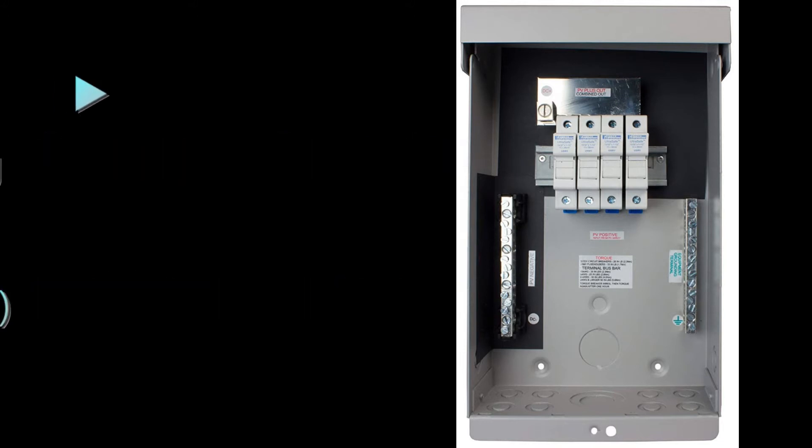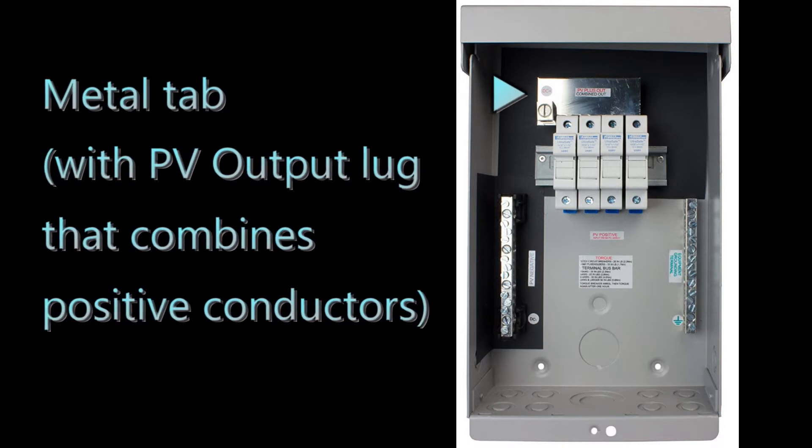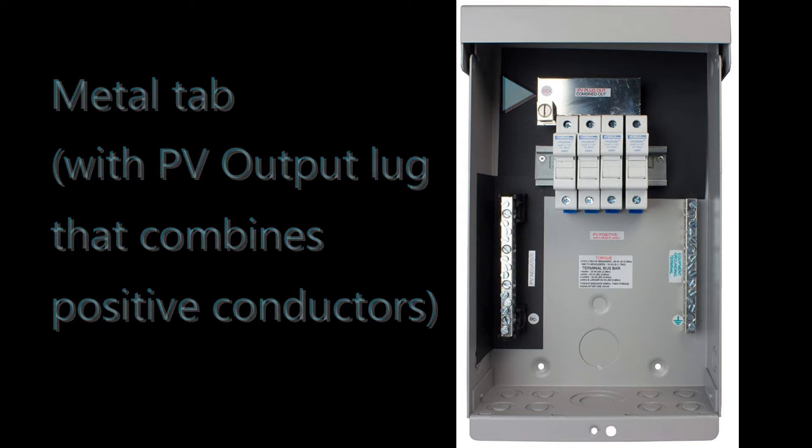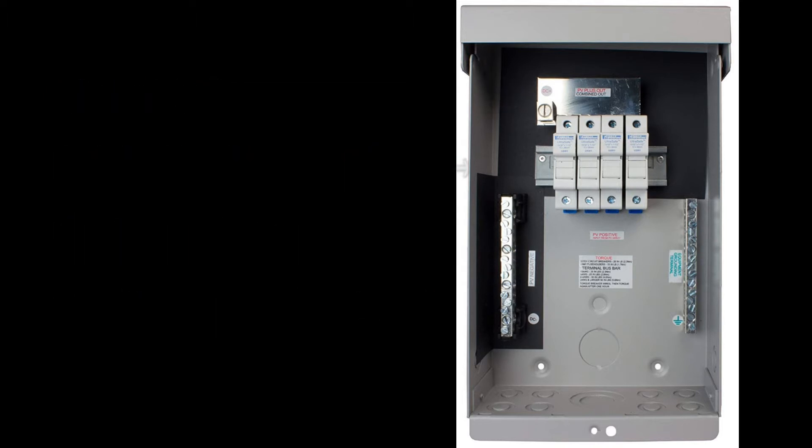In these cases you only put overcurrent protection on the positive leg of your system. Now at the top of each of these circuit breakers or overcurrent protection, there's a metal tab that fits in.